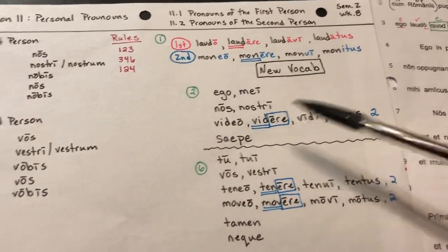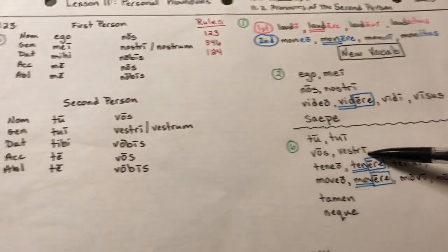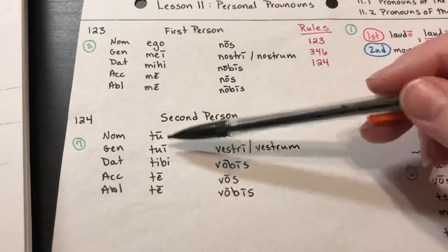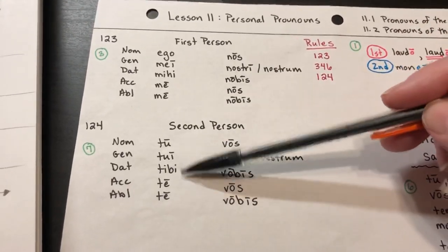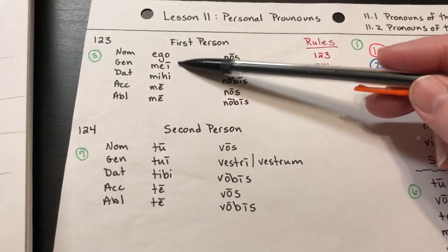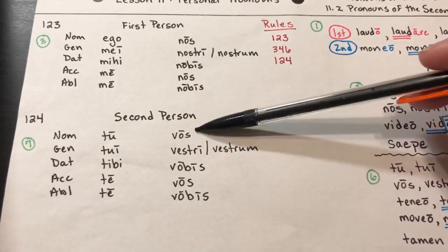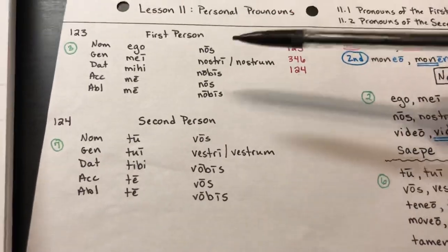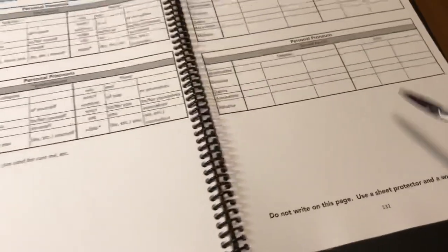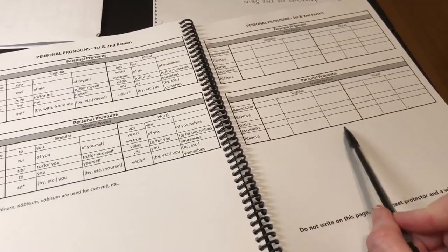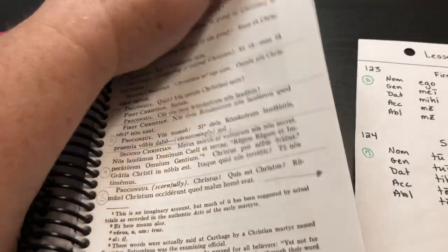These two new pronouns introduce the second person: second person singular and second person plural. We repeated and chanted them — tu, tui, tibi, te, te — over and over, and looked at how they compare to the first person forms. Many endings are similar. Then the same for the plurals: nos, nostri, nobis, nos, nobis — vos, vestri, vobis, vos, vobis. Students should copy these into their workbooks, page 130 and 131, where there's a chart they can use.